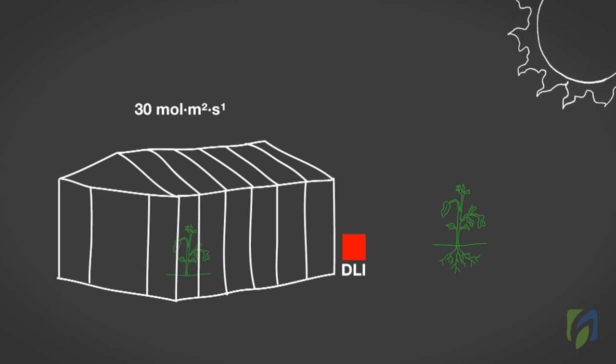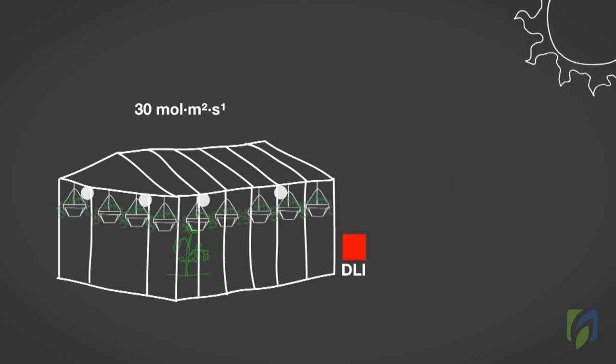The reason DLI is reduced inside the greenhouse is because of the shading caused by hanging plants, overhead equipment, pipes, and greenhouse structural supports.